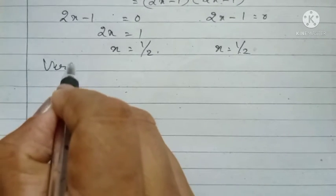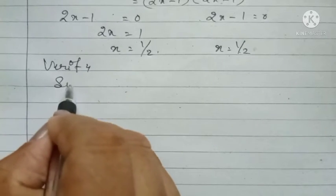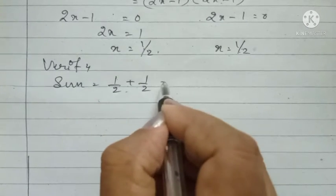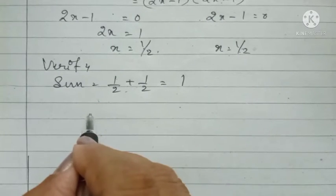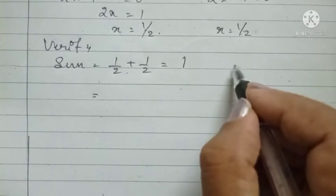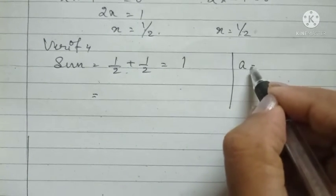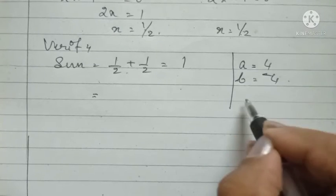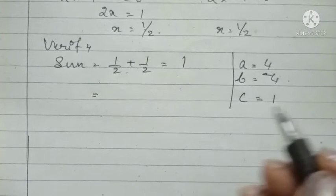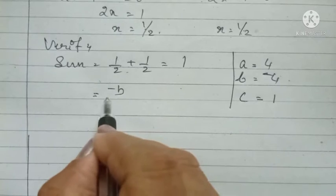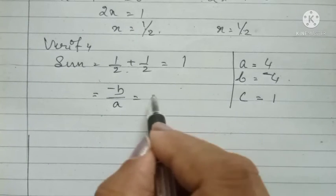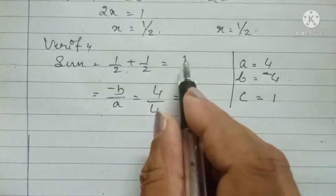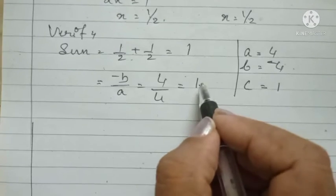Now we verify. Sum of zeros = 1/2 + 1/2 = 1. According to the formula, sum = minus B by A. Here A = 4, B = minus 4, C = 1. So minus B by A = minus(minus 4) by 4 = 4 by 4 = 1. Both values are equal, so it is verified.